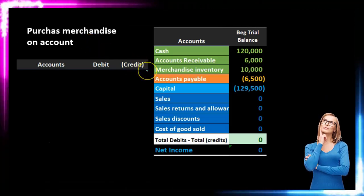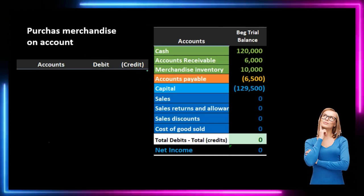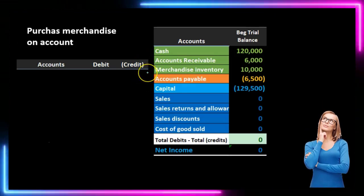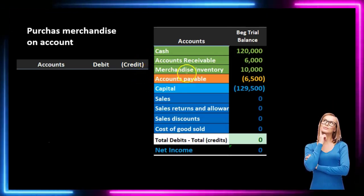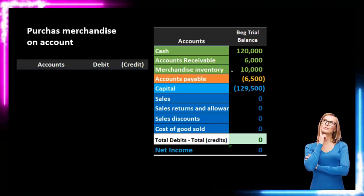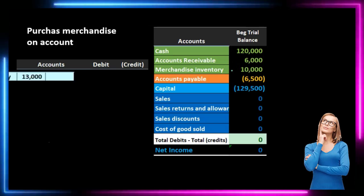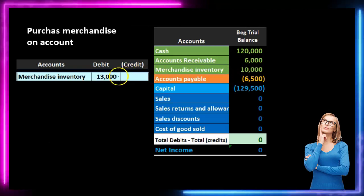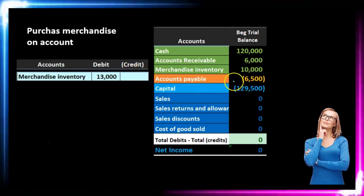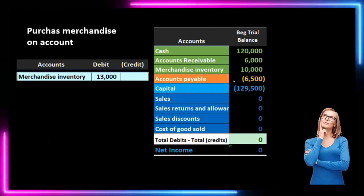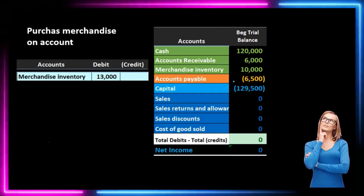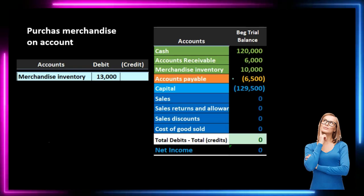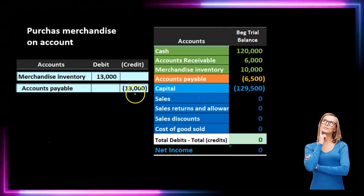We're going to purchase merchandise on account, so we're not going to pay cash — we're going to pay the accounts payable. The merchandise inventory is what we are getting and it has a debit balance, so we make it go up with another debit. We'll debit the merchandise inventory. The credit then will go to accounts payable, which has a credit balance represented with brackets. It needs to go up because the liability is increasing since we owe more money for purchasing on account, so we do the same thing as its normal balance — a credit. Here is the journal entry.